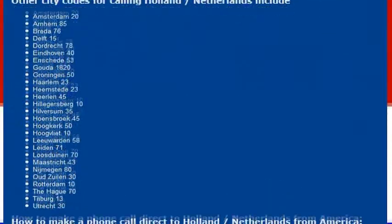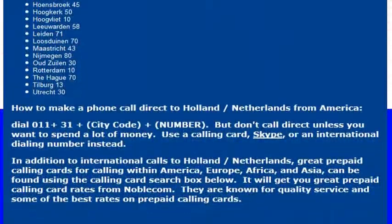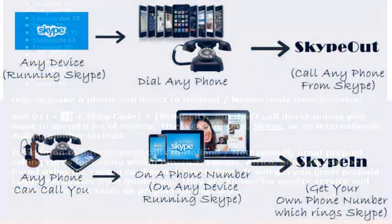In any case, if you are calling the Netherlands from the United States and you want to be able to make that call from any phone in the U.S., you will need to know the international dialing code for Holland, which is 31. So if you were dialing from a landline or a regular phone, you would dial 011 and then 31.